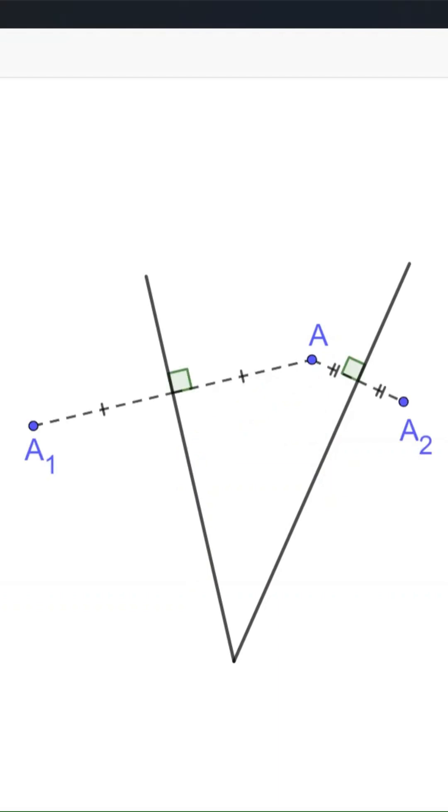This can be done through a couple of reflection transforms, or mirror transforms. From the fixed point A, construct its reflections across the two sides of the angle, label them as A1 and A2.